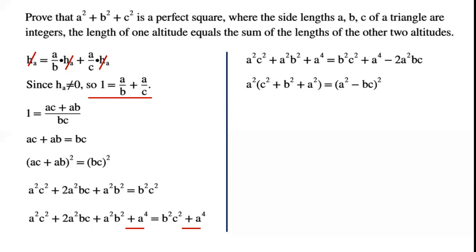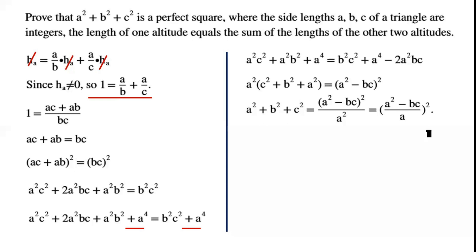The right-hand side can be written as a perfect square: (A squared minus BC) all squared. By rearranging, A squared plus B squared plus C squared equals (A squared minus BC) squared over A squared, which is a perfect square. Thus, A squared plus B squared plus C squared is a perfect square, and the proof is now complete.